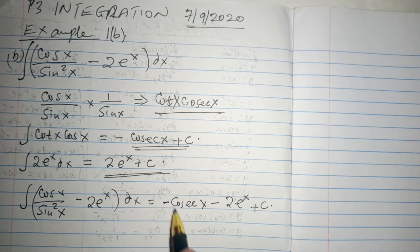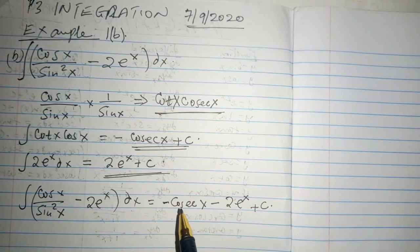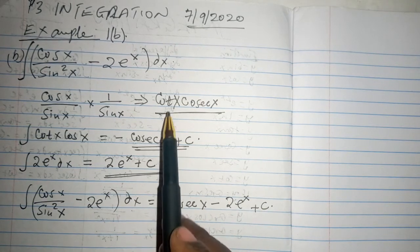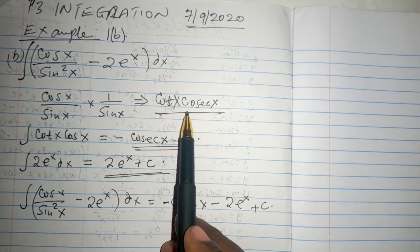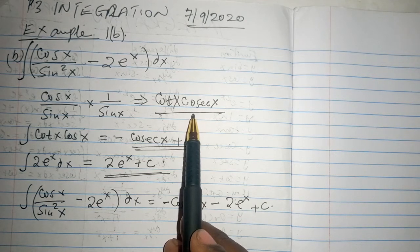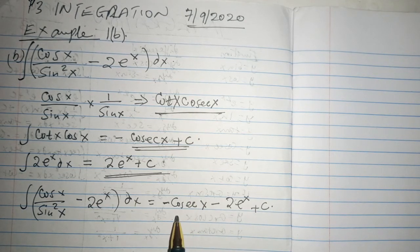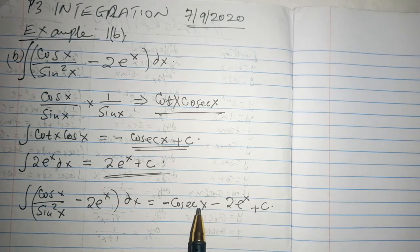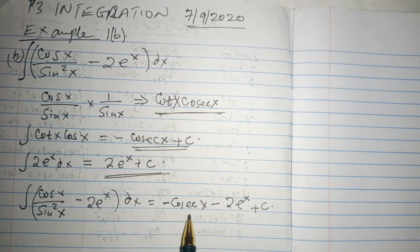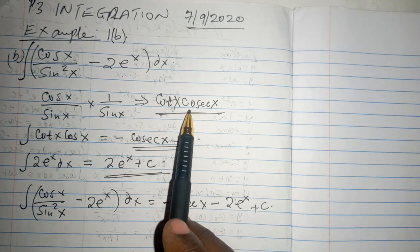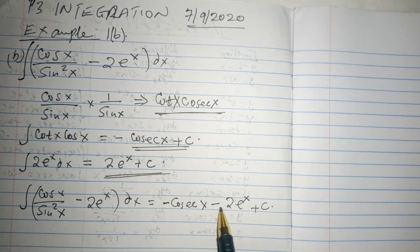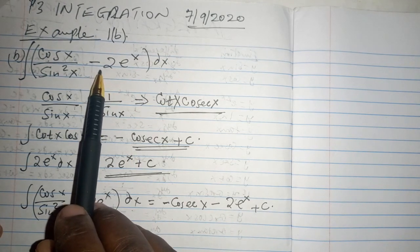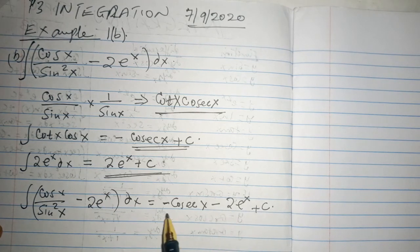Remember, this negative is reflected from the integral aspect because we found that the integral of cot x cosec x should be negative cosec x, because we had found that the differential of cosec x is negative cot x cosec x. And of course, this negative sign is again reflected here.